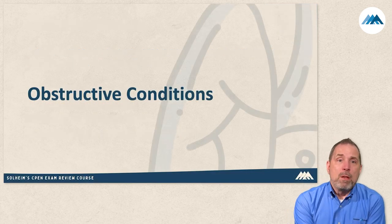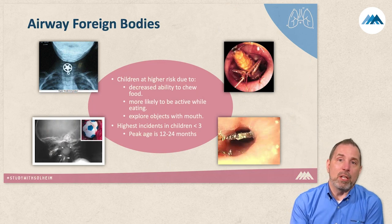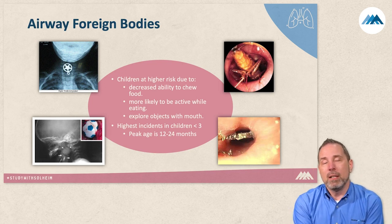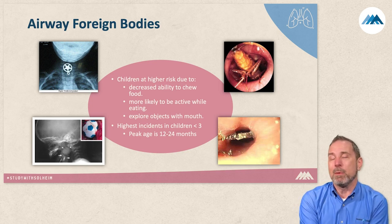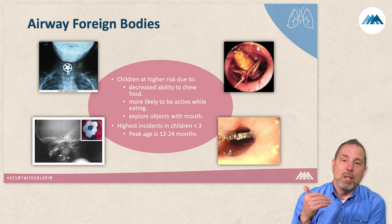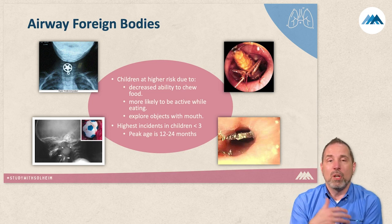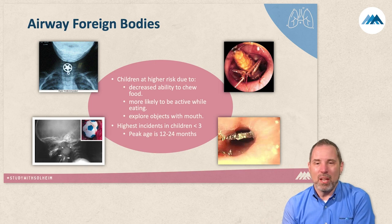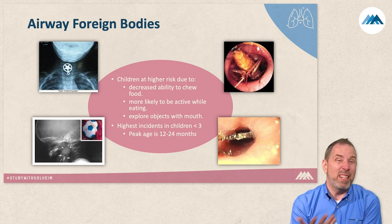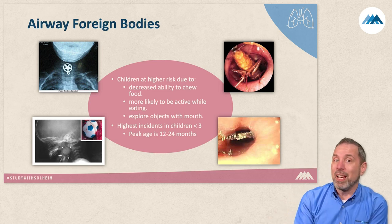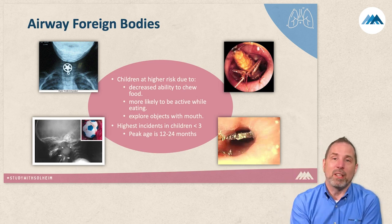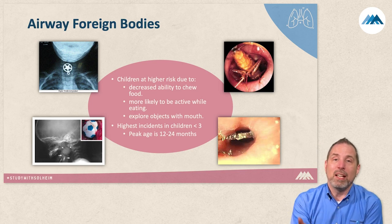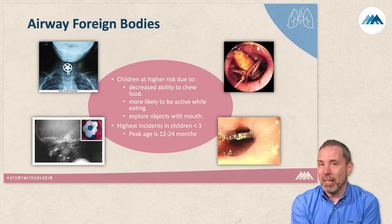Let's start with obstructive conditions, beginning with foreign bodies. Airway foreign bodies are the emergent aspect — in the GI section we'll cover swallowed objects, but inhaled airway foreign bodies are more likely to be on the exam. Children are most at risk as they're exploring, specifically between 12 and 24 months, when they have the mobility but lack protective defensive mechanisms. The funnel-shaped oropharynx and trachea mean that inhaled objects are likely to get trapped.